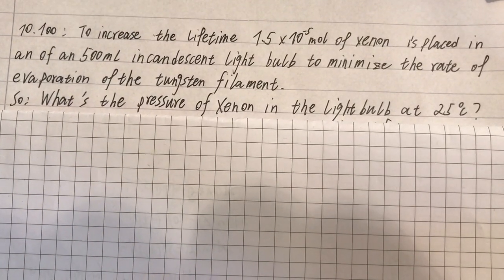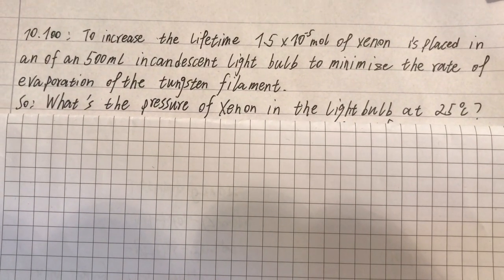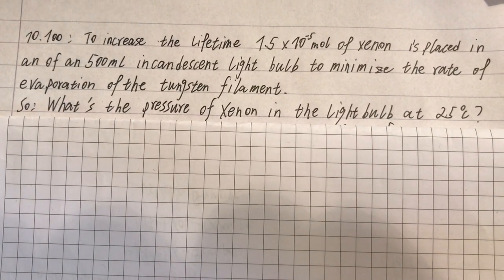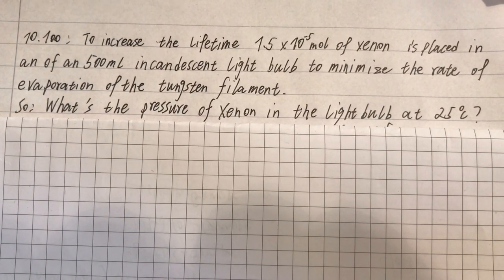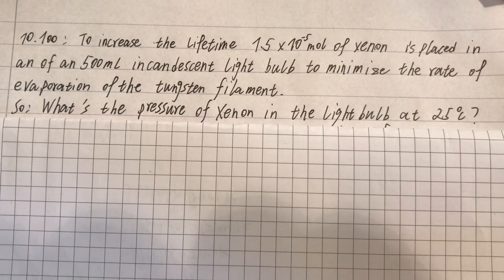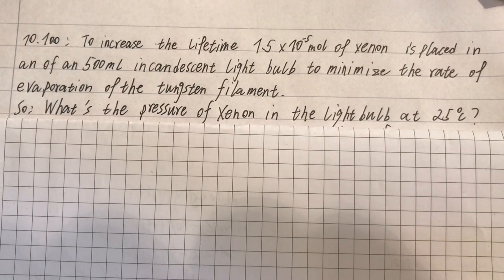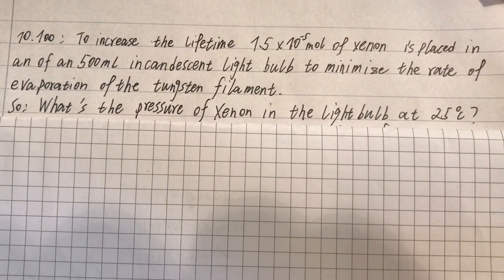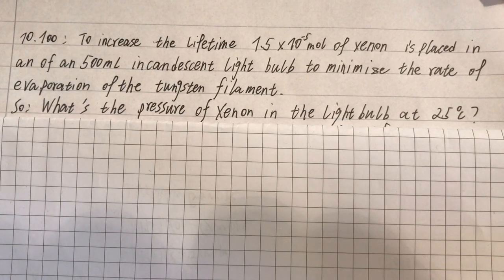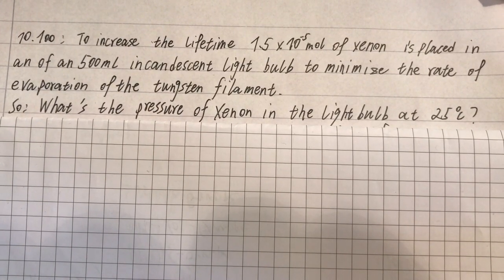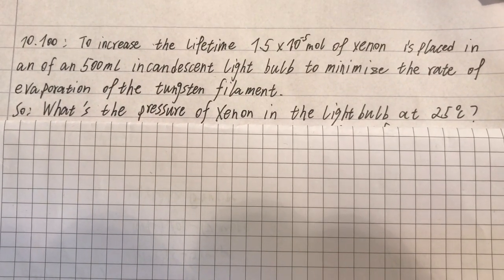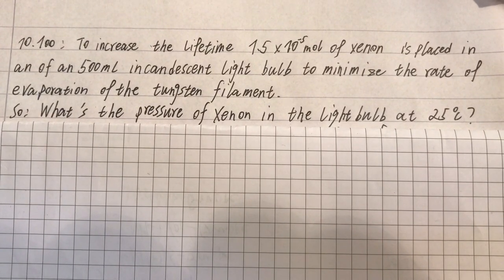Hello everybody, in this video, I'm going to explain exercise 10.100. To increase the lifetime, 1.5 times 10 to the power of minus 5 mole of xenon is placed in a 500 milliliter incandescent light bulb to minimize the rate of evaporation of the tungsten filament. So, what's the pressure of xenon in the light bulb at 25 degrees?